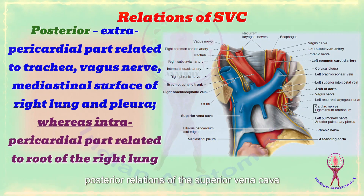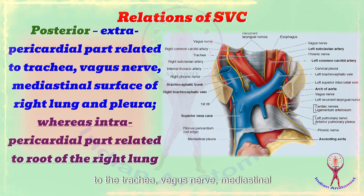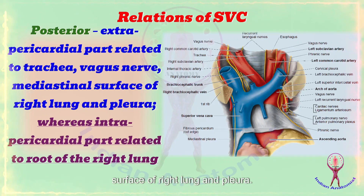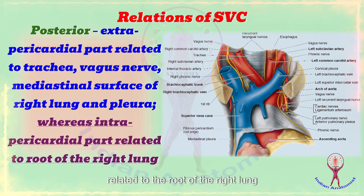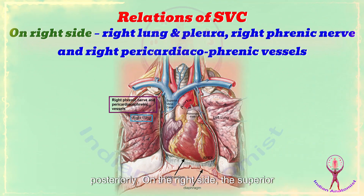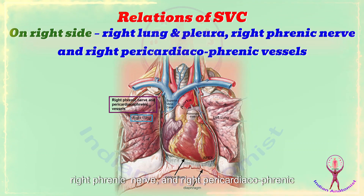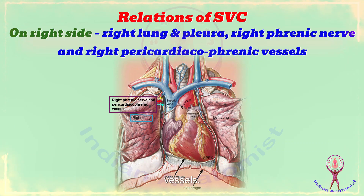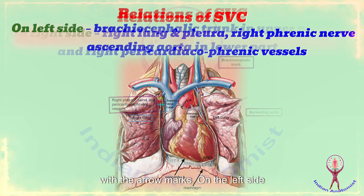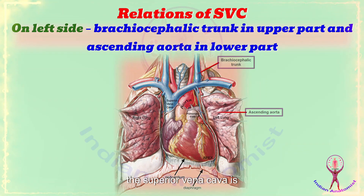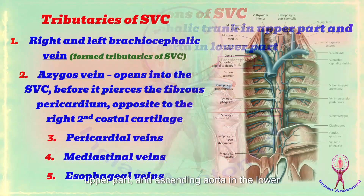The posterior relations of the superior vena cava are: the extrapericardial part is related to the trachea, vagus nerve, mediastinal surface of the right lung and pleura, whereas the intrapericardial part is related to the root of the right lung posteriorly. On the right side, the superior vena cava is related to the right lung and pleura, right phrenic nerve, and right pericardiacophrenic vessels. The pericardiacophrenic vessels are shown with arrow marks. On the left side, the superior vena cava is related to the brachiocephalic trunk in the upper part and ascending aorta in the lower part.